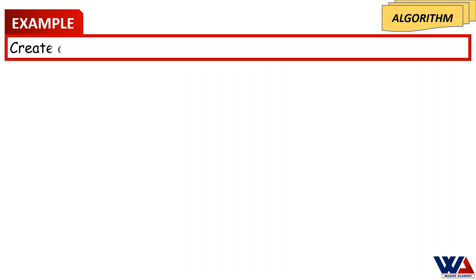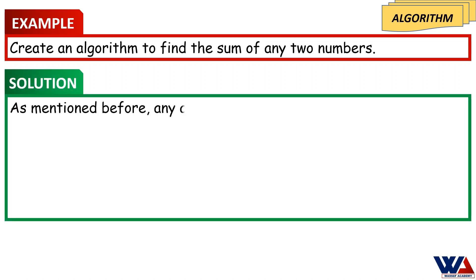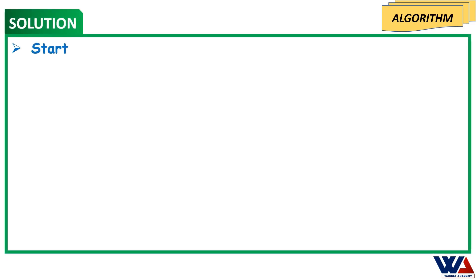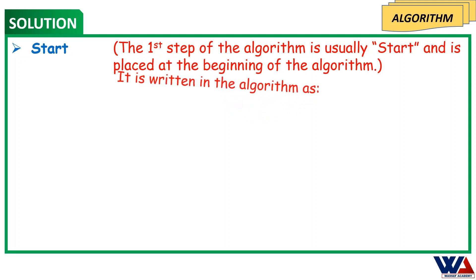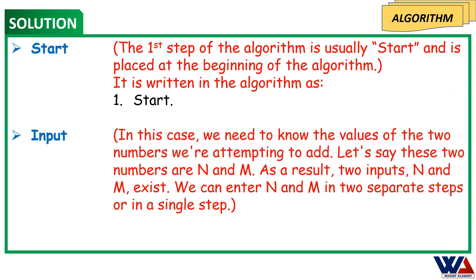Example: Create an algorithm to find the sum of any two numbers. Any algorithm consists of five major components: start, input, calculation, output, and end. The first step is Start. For the input, we need to know the values of the two numbers we're attempting to add — let's say these two numbers are n and m. There are two inputs, n and m, which we can enter in two separate steps or in a single step.